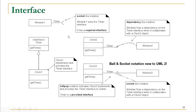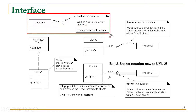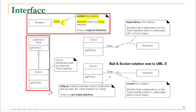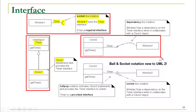If we want to represent an interface in a class diagram, we can use different types of notation. The first is the socket line notation, where — for example — Window1 uses the Timer interface and we simply write the interface name and create a socket. Another notation shows that Clock1 implements the Timer interface, illustrating the implementation relationship. Then there is the dependency line notation, which tells us that Window2 has a dependency on the Timer interface.